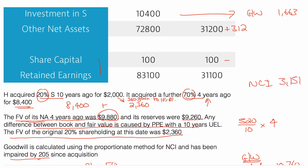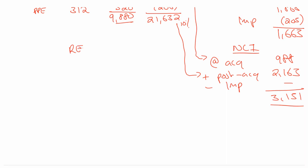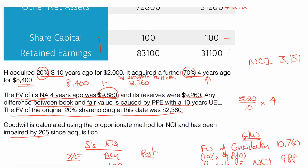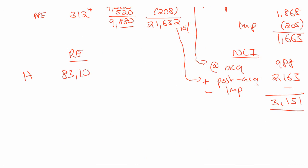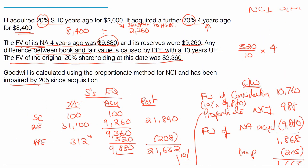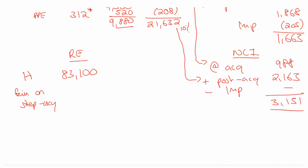3151. And then finally, do my retained earnings working and everybody's happy. So retained earnings, I want all of H or P or whatever it is that it's called. In this question, 83,100. I have made a step acquisition. So there will be a gain or sometimes a loss on the step acquisition. And that gain on the original amount was 360. That goes to H's retained earnings, 360. Then I want S. I don't want all of S. I want my share of post acquisition, which is obviously the 90% then of that figure. And if you put that in your calculator, you would get 19,469.